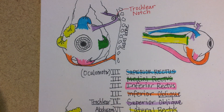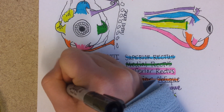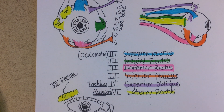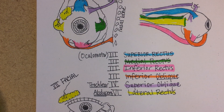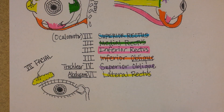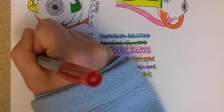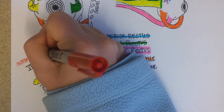The tear gland is stimulated by the seventh cranial nerve, which is called the facial nerve. This cranial nerve is also responsible for powering the skeletal muscles that move your face. The function here is motor output, and it is autonomic — specifically parasympathetic.